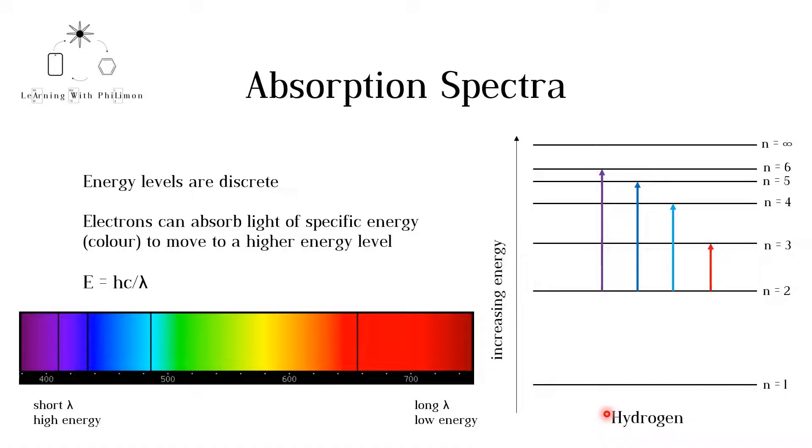If visible light is shone upon hydrogen atoms, the electrons will absorb specific wavelengths of light to transition to a higher energy level. In the case of hydrogen, red light can be absorbed for the transition between energy levels 2 to 3.